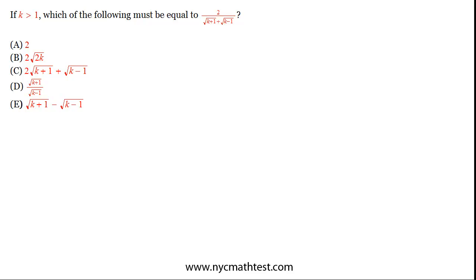When we look at the answer choices, we see there are variables in the answer choices. So one method would be to just choose a number for k, plug it in, and see which one works out to be equal. That's not a bad strategy. The reason you'd want to consider it is because there's a danger in getting bogged down in algebra and wasting a lot of time when plugging numbers might just be faster. In this particular example, I think if you see the method, it's actually pretty quick to do it algebraically. So I'm going to suggest we do that, though I'm totally open to you choosing numbers as an alternative strategy if that's your preference.